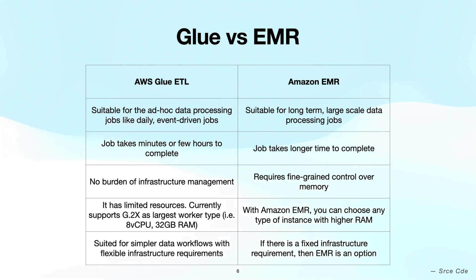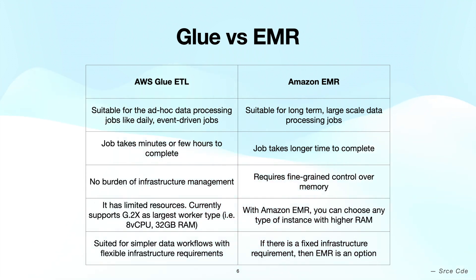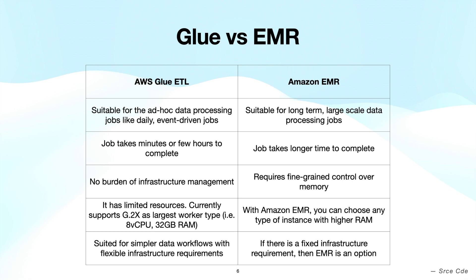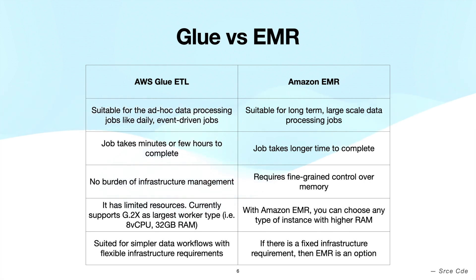Glue ETL is serverless and there is no burden of managing infrastructure, so it is easy to get started with. On the other hand, EMR adds the burden of management and is well suited when the use case requires fine-grained control over memory. In terms of resources, Glue ETL is limited to 8 vCPU and 32 GB of RAM, so if the job requires more resources then EMR is the way to go. AWS Glue ETL is for simpler workflows with flexible infrastructure requirements, whereas if there are fixed infrastructure requirements then Amazon EMR is an option. In the end, everything boils down to the requirements.